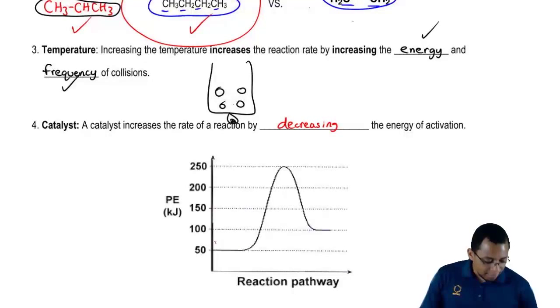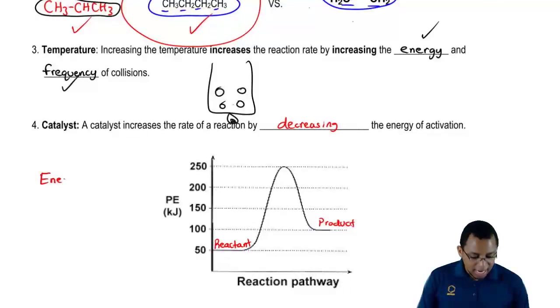Here we have our reactant line. Over here, we have our product line. Basically, this is called an energy diagram. Our reactants are starting off here at around an energy of 50 kilojoules. The reactants then have to travel up here to the top. At this very point up here, this is called our transition state.